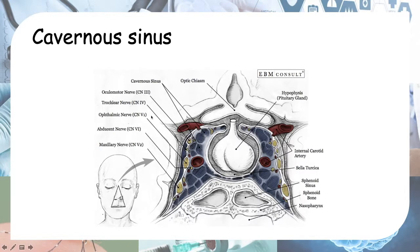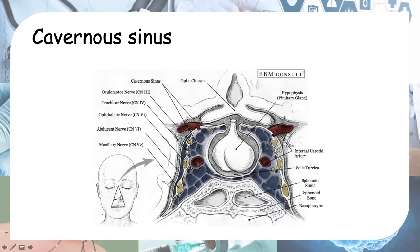Another nerve we haven't discussed is the trigeminal nerve, cranial nerve 5, with its V1 and V2 branches in the cavernous sinus. One way to test if V1 is affected is by performing a corneal reflex — gently touching a cotton wisp to the eye. The normal reflex is to blink, but in patients with a lesion to the trigeminal nerve, that reflex will be absent.